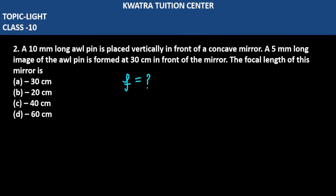We are given the object height and the image height. The image is 5 mm long. First of all, convert it to cm because all the values are in cm. Divided by 10, you will get 0.5 cm.